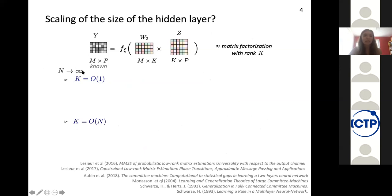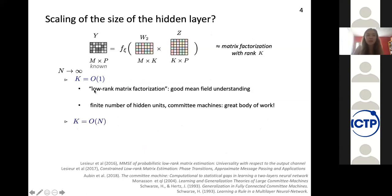So we take N to infinity and let's say that we keep K of order one. Well, in this case, we are in the low rank matrix factorization regime, and we have a good mean field understanding of this model, thanks to Thibault Le Sieur and Florent and Lenka in particular. And within the context of deep neural networks, it means that we have a finite number of hidden units. So those models are actually called committee machines and they are well understood within the mean field framework. And there is a great body of work with a few references that I give you here underneath that uncover really interesting phenomena on this model. And I encourage you to check it out if you are not familiar with it.